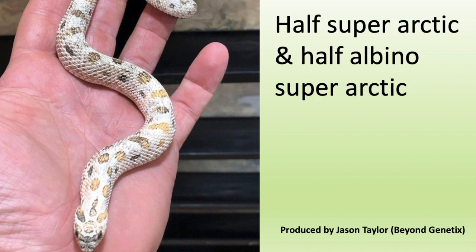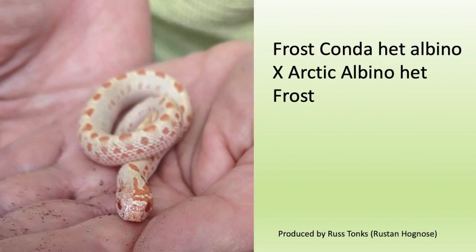The first hognose chimera example was produced by Jason Taylor at Beyond Genetics. This snake is half super arctic and half super arctic albino — it displays characteristics of both. It started out as two separate embryos, one a super arctic and one a super arctic albino, and they fused together inside the mother, resulting in a very unique looking snake that visually carries both genetics.